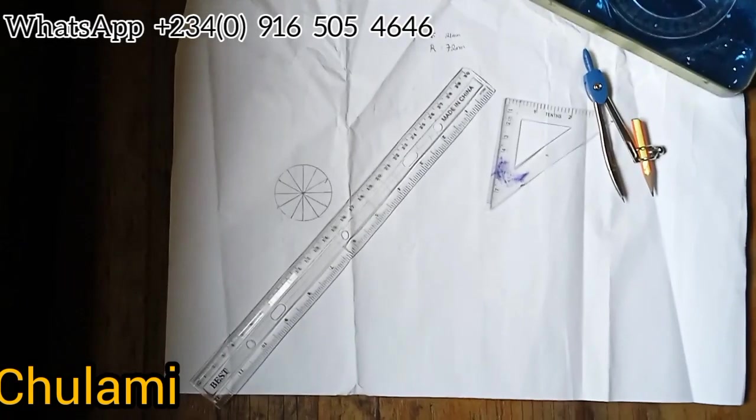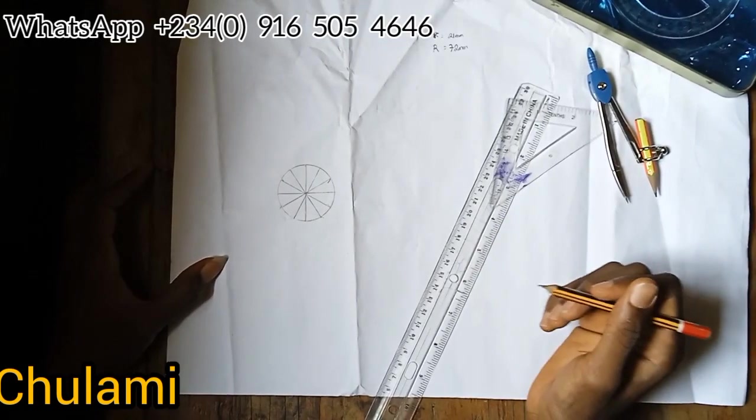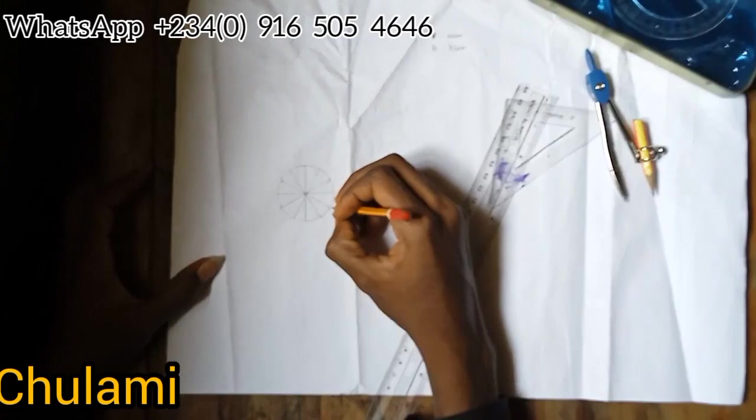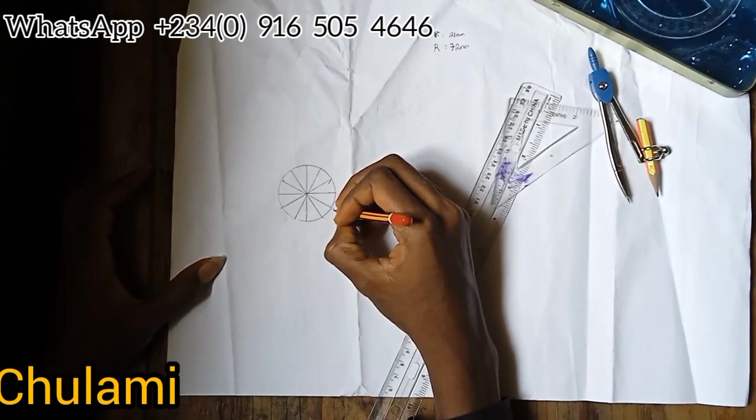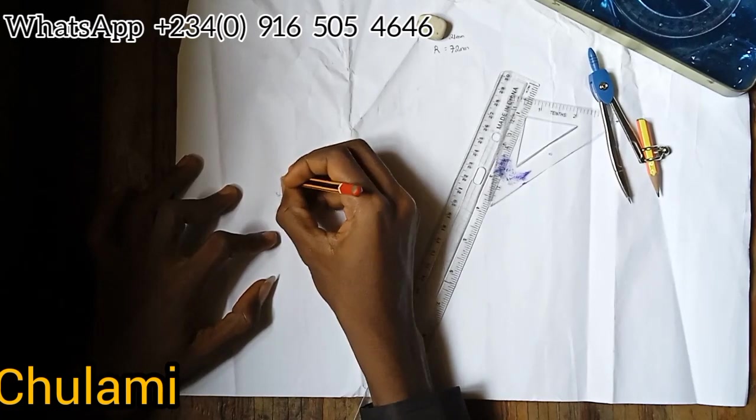I'll mark the midpoint and divide this circle into 12 equal parts. Now I will start numbering. I'll call this one zero, then one, two, three, four, five, six, seven, eight, nine, ten, eleven, and twelve.